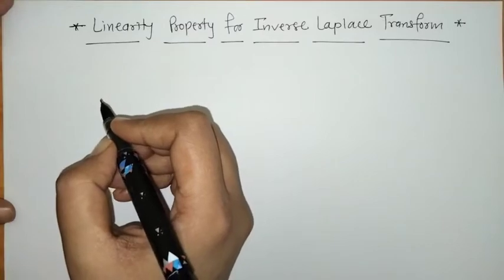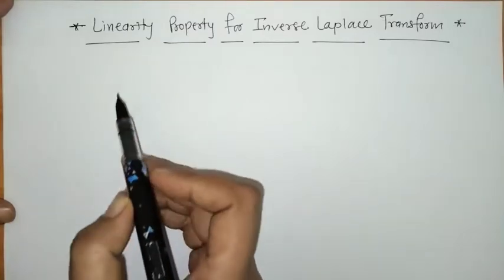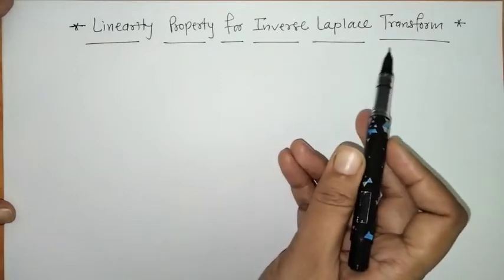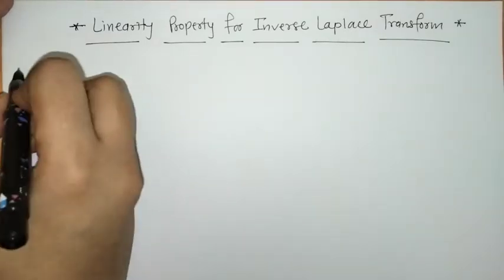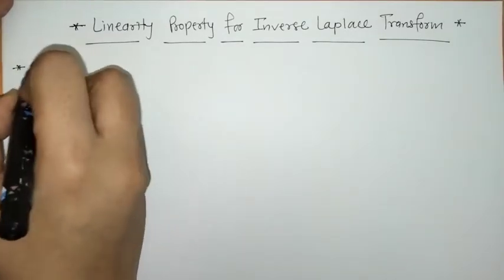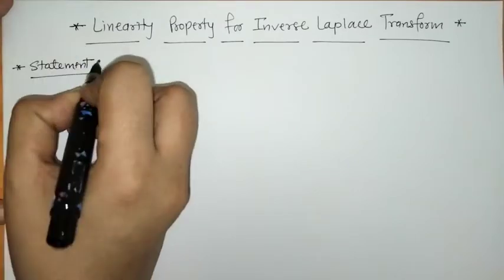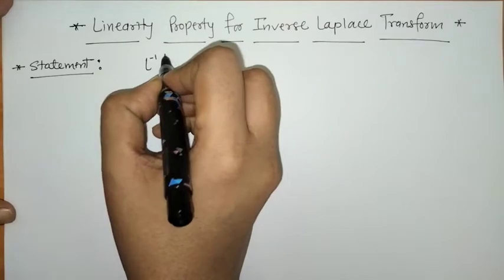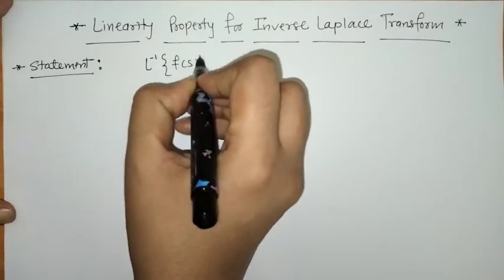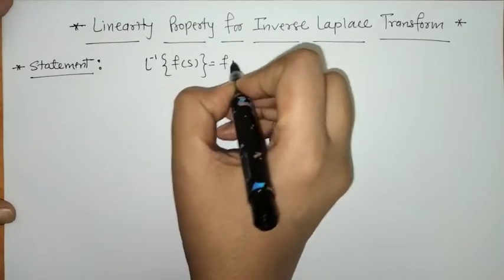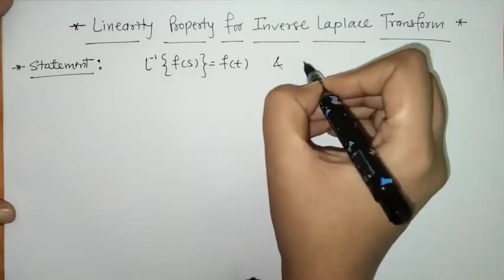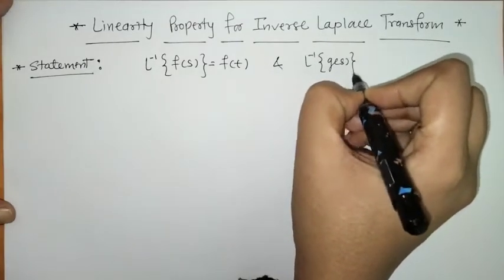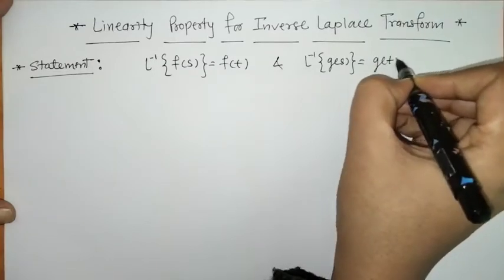Hello everyone, welcome to Unlock Maths. Today we have to discuss the linearity property for the inverse Laplace transform. So first, we write down the statement of this property. If L⁻¹{F(s)} = f(t) and L⁻¹{G(s)} = g(t),